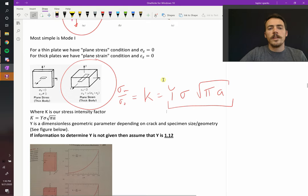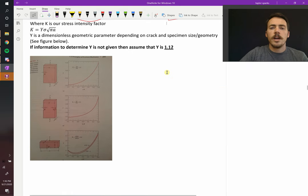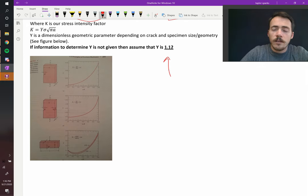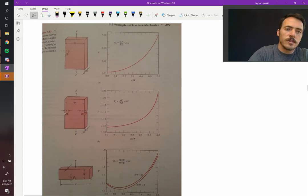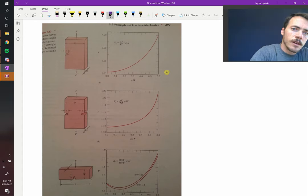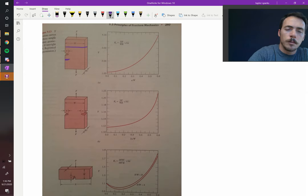Now, what is Y, this geometric shape parameter? Unless we say otherwise, you should use the value of 1.12 in this class. What can the value actually be? It totally depends. Consider these scenarios. Let's say you've got a surface crack right here, and it has the distance of A, but the overall material has some distance W. Well, Y is a function of A over W. It starts out at 1.12, right there.